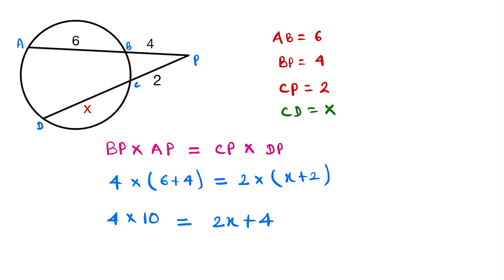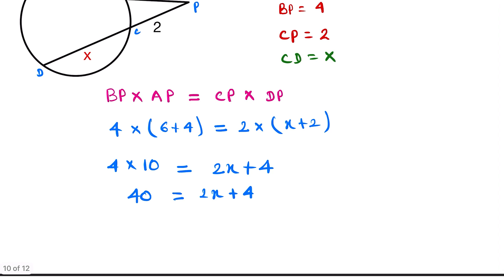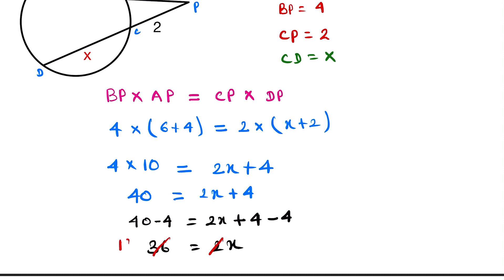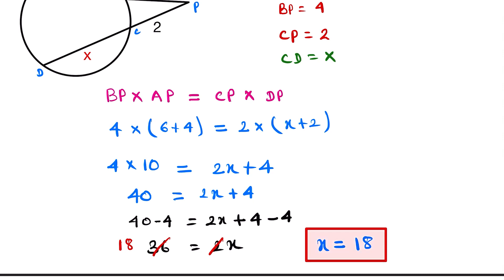So we have 40 is equal to 2x plus 4. Now we subtract 4 from both sides: 40 minus 4 is equal to 2x plus 4 minus 4. This becomes 36 is equal to 2x. Dividing both sides by 2, x is equal to 18. So the length of CD is equal to 18.